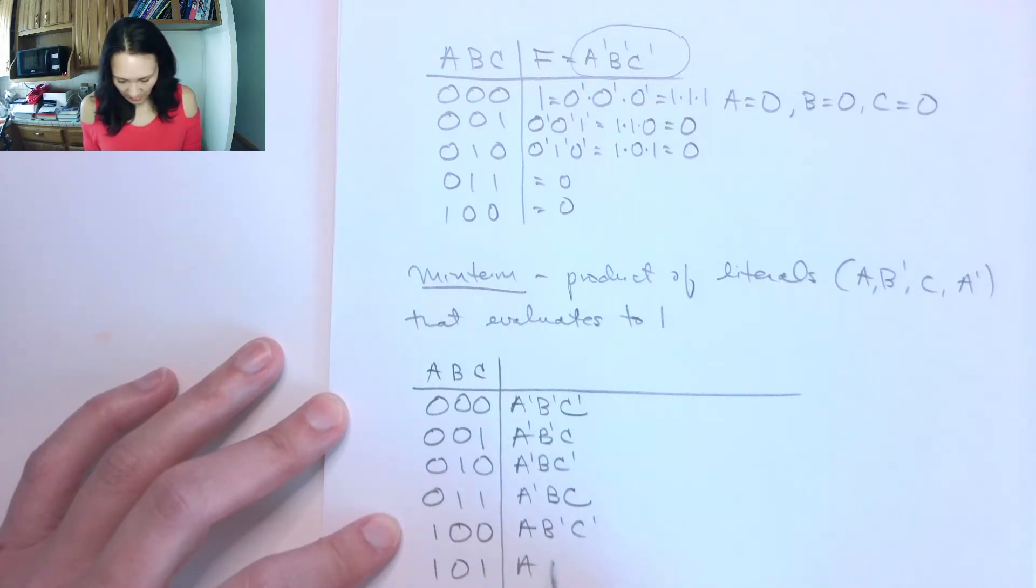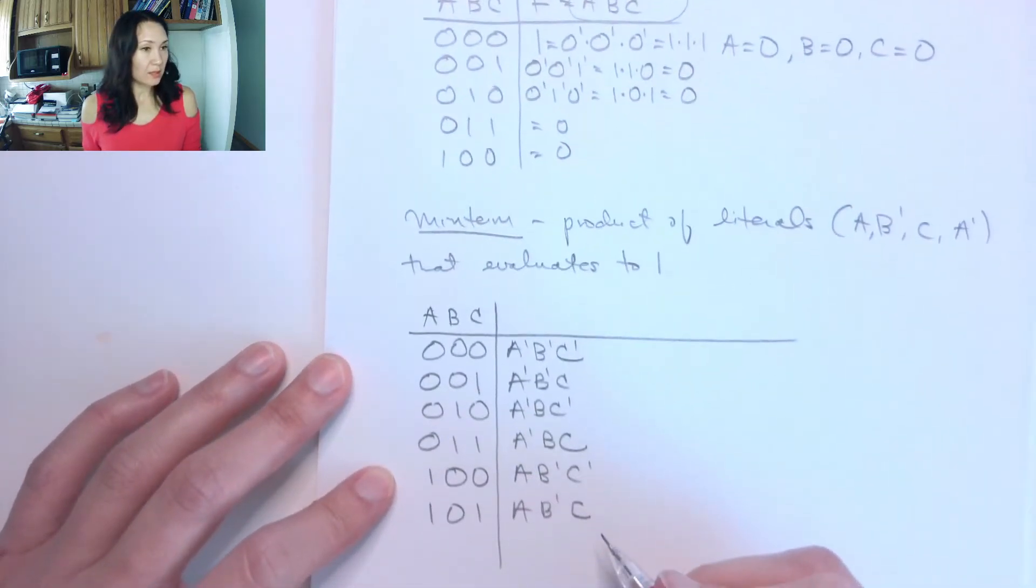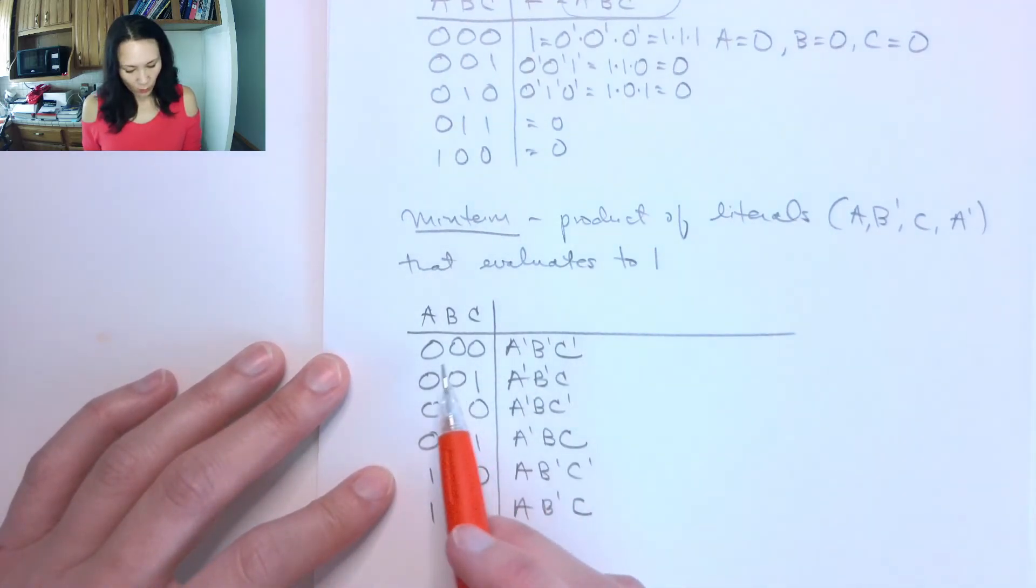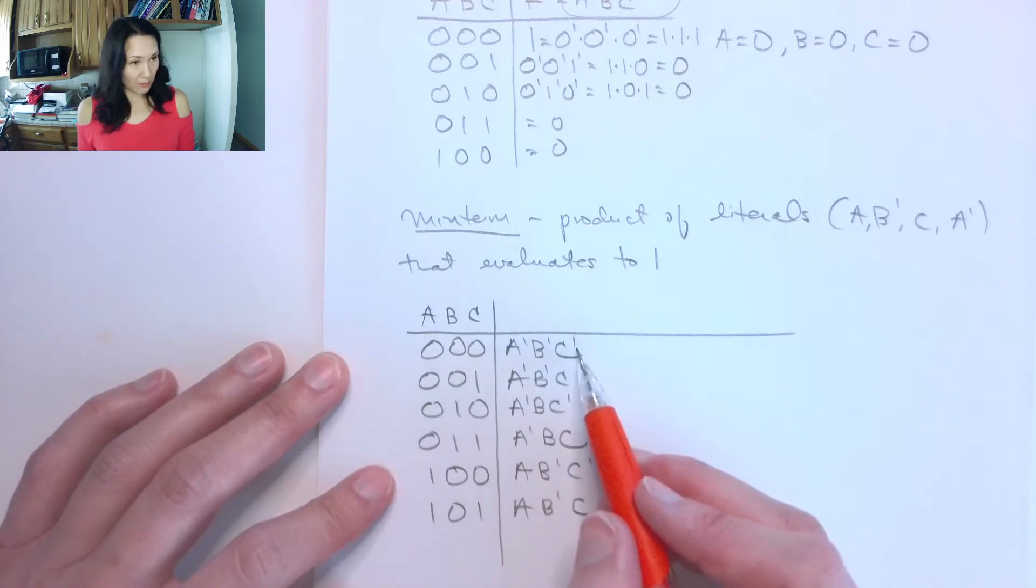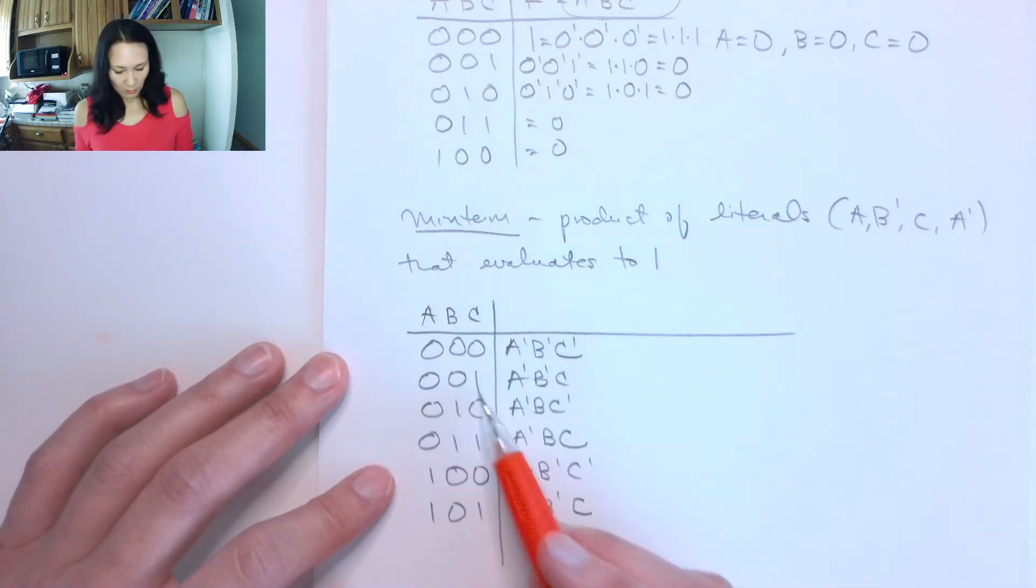1, 0, 1 would be A, B naught, C. And you're probably starting to see a pattern here. So wherever we have a 0 input, our minterm is going to have that input complemented. And then wherever we have a 1 input, that input's not going to be complemented.